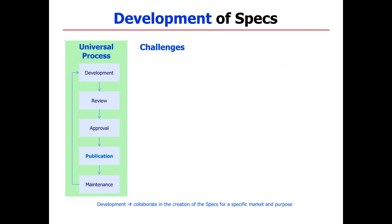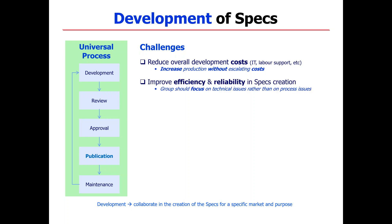Let's look at the challenges in each one of these steps. In development — which many of you will relate to — is reducing overall development costs. Any organization has this pressure: you need to do at least the same or more with less resources. You have to increase production without escalating costs, improve the efficiency and reliability of specification creation. The groups developing these specifications should focus only on creating them, with less time on process issues. You also need to simplify the life cycle of the specifications and add value in each phase.